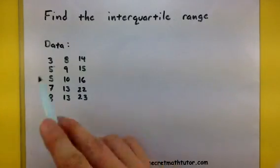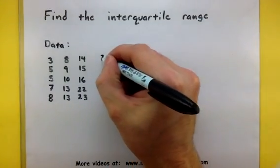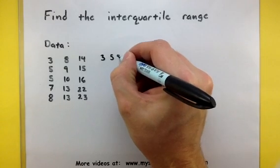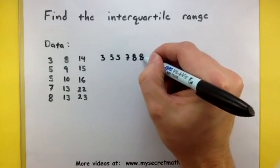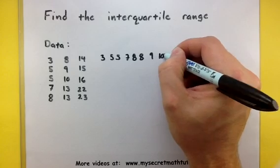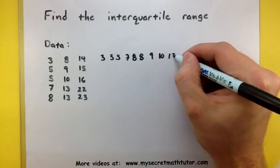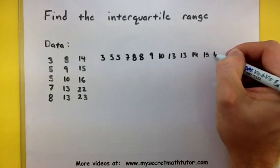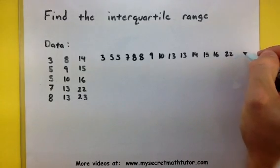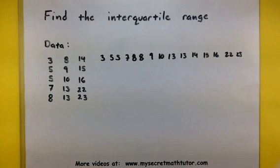So let's see how this process works out. First, I'm going to take all of this data and just write it out from lowest to highest. This will allow me to get a better visual sense of where the median of the upper half and lower half fall. There we go. There's all of our data.